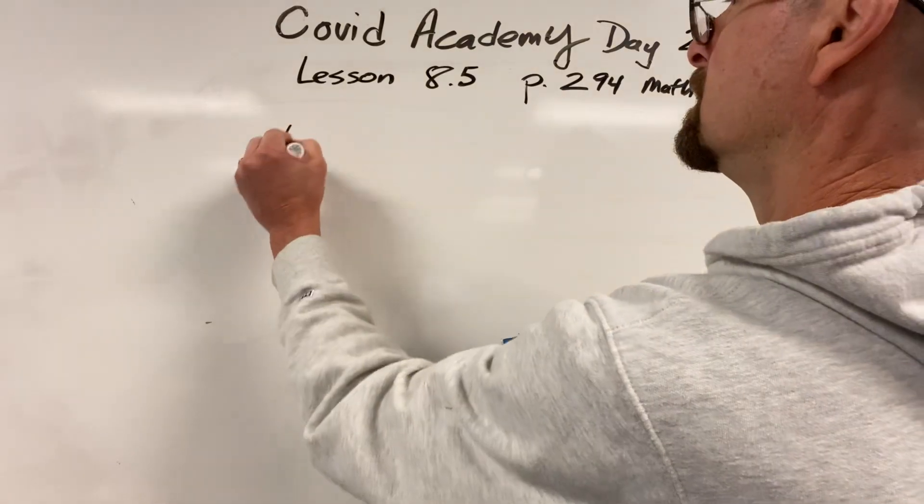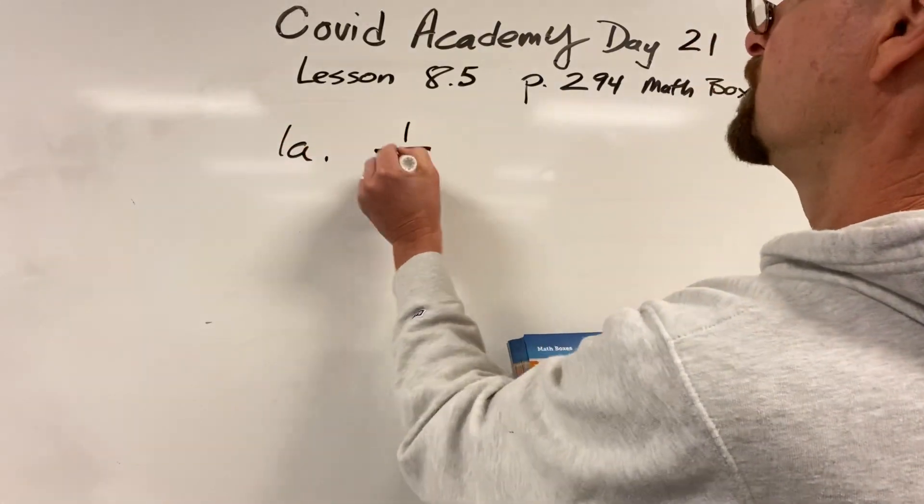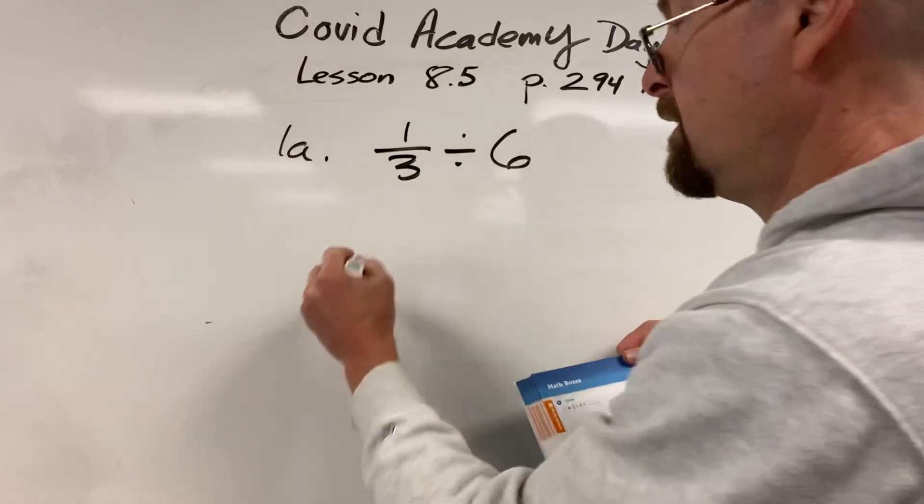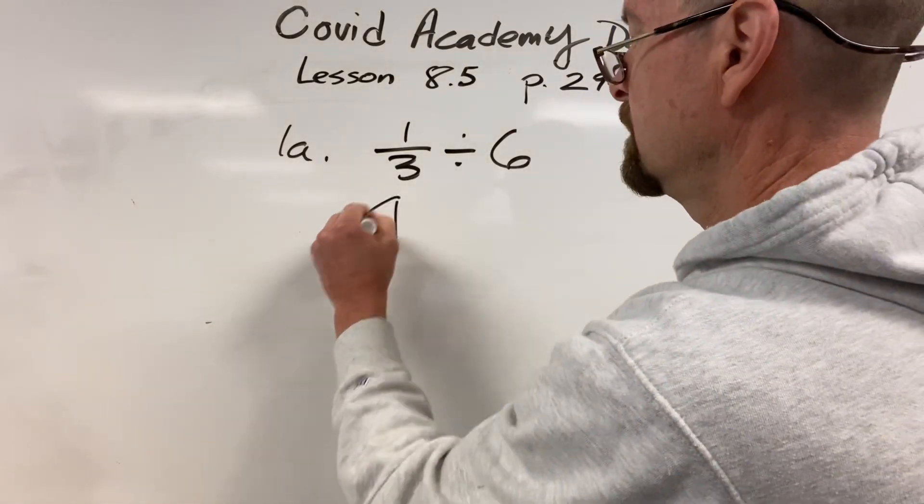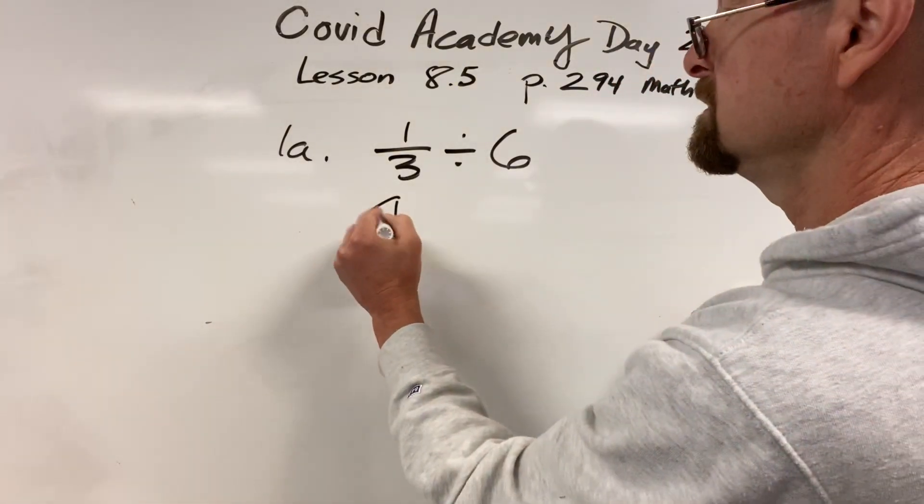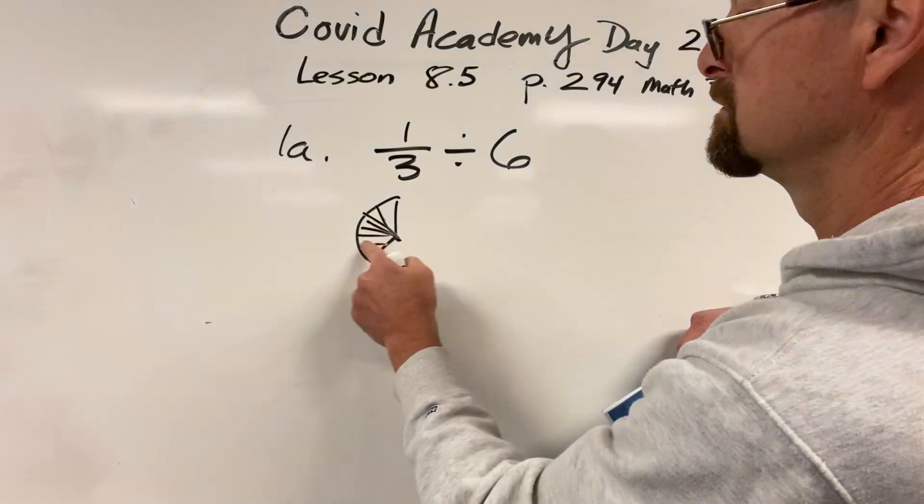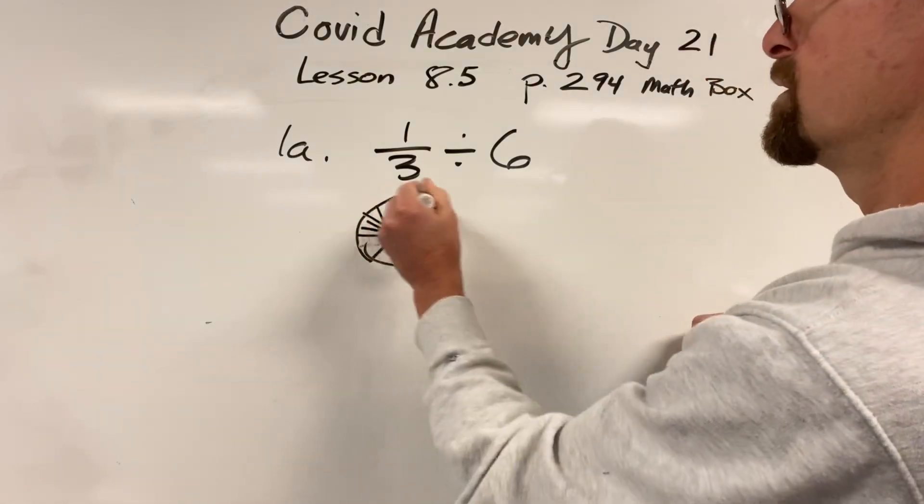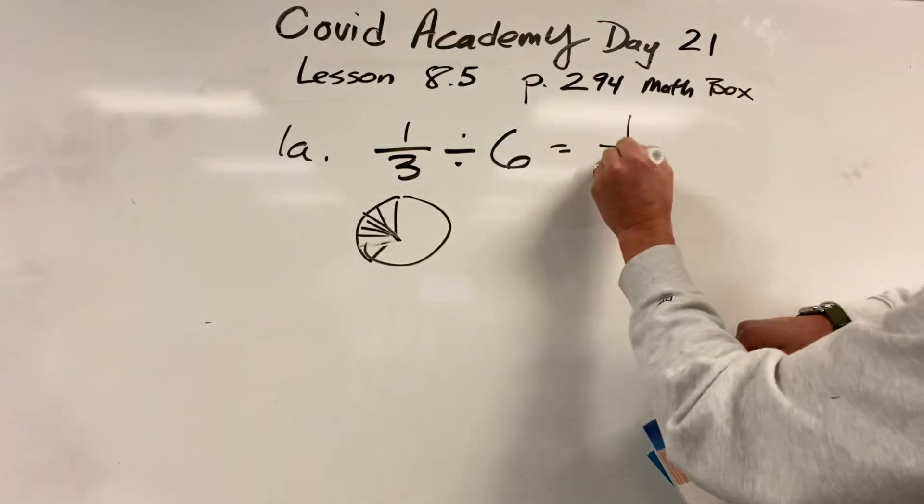Number 1a: 1 third divided by 6. So I'm taking the third, which looks like about like that, and a pizza, and I'm cutting it up into six pieces. Something like that. So how many, what fraction is that of the whole thing? 1 eighteenth.